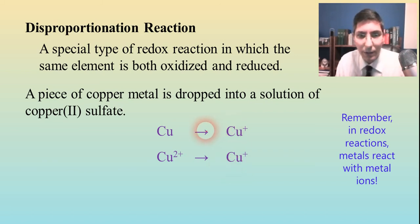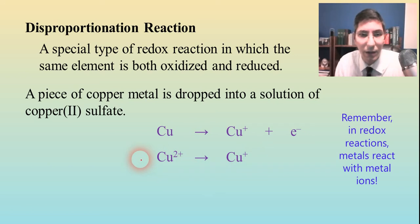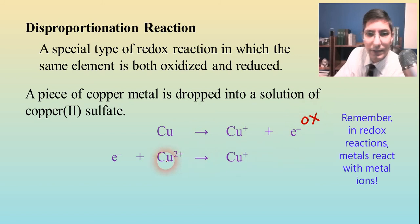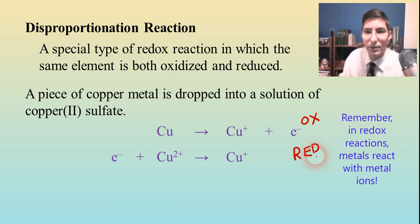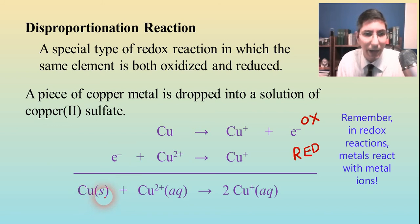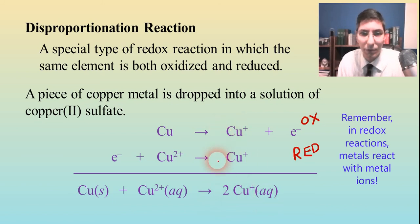We have to balance these half-reactions. In the first one we need an electron on the right side, and in the second one we need an electron on the left side. Since we're losing an electron in the first, that's an oxidation; since we're gaining an electron in the second, that's a reduction. Adding them together, the electrons cancel out. The overall balanced equation gives us: one copper atom solid plus one copper(II) ion aqueous produces two copper(I) ions aqueous - the one plus one gives us two.